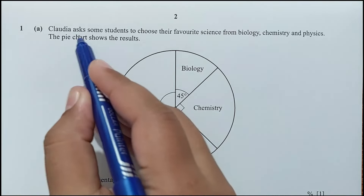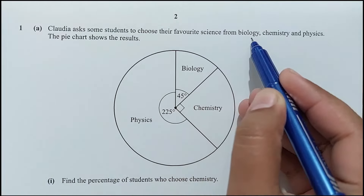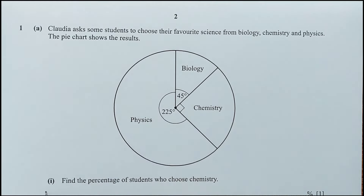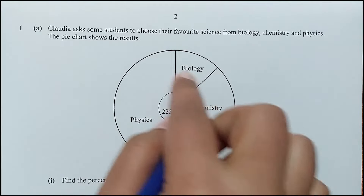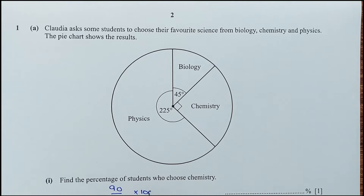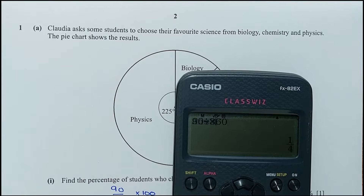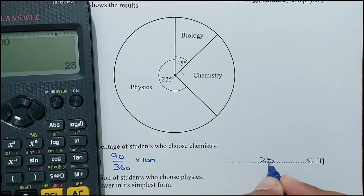Question 1, part A. Claudia asked some students to choose their favourite science from biology, chemistry, and physics. The pie chart shows the results. Find the percentage of students who chose chemistry. Chemistry is 90 degrees out of 360 degrees total. So 90 divided by 360 times 100 gives 25%. So 25% of students chose chemistry.